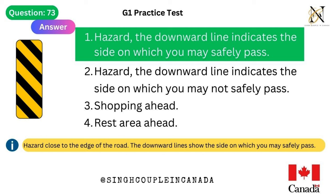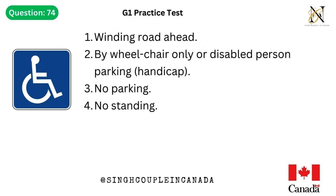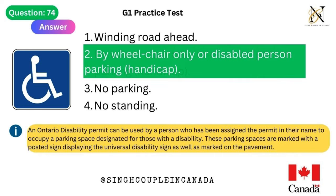Question 74. This traffic sign means: 1. Winding road ahead. 2. By wheelchair-only or disabled person parking, handicap. 3. No parking. 4. No standing. Answer is 2. By wheelchair-only or disabled person parking, handicap. An Ontario disability permit can be used by a person assigned the permit to occupy a parking space designated for those with a disability. These parking spaces are marked with a posted sign displaying the universal disability sign as well as marked on the pavement.